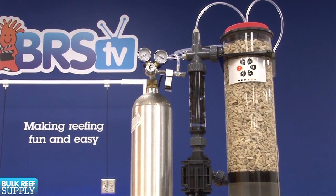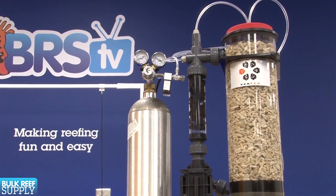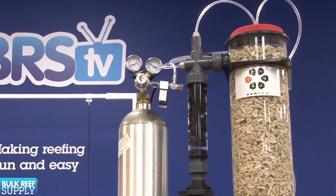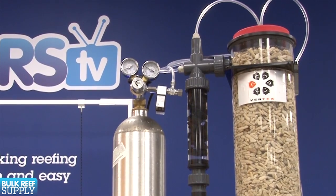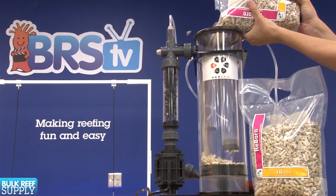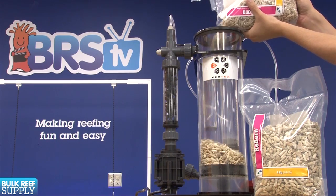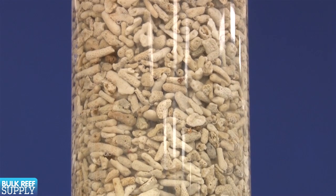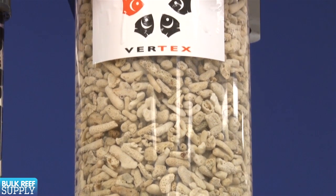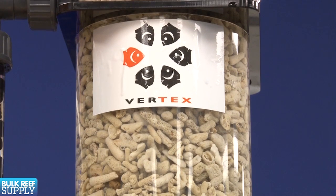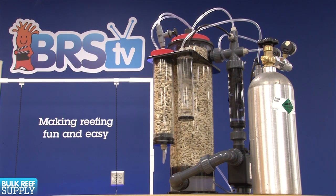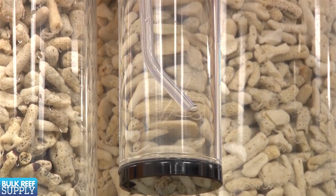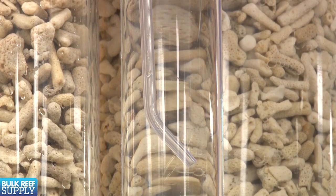Last but not least we have calcium reactors. Calcium reactors can be used on almost any type of tank but most commonly found on medium to heavy demand tanks such as an SPS dominant tank. The concept they work on is fairly simple. You fill the main chamber of the reactor with calcium carbonate media, slowly dissolve the media and drip it back into the tank. The media is often small bits of coral skeleton so it makes a lot of sense to dissolve this into its basic elements for corals to use again. To dissolve the media reactors require a tank of carbon dioxide which is slowly bubbled into the reaction chamber which lowers the pH and allows the surface of the media to start breaking down.